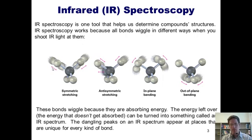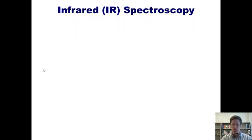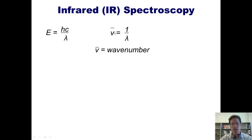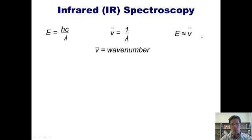Now I want to reacquaint you with a few physics equations you might remember vaguely from a past class. Here's the first equation: energy equals HC divided by lambda. Lambda is wavelength. Now this is supposed to be a symbol called nu with a little line over it, which represents wavenumber. Wavenumber is inversely related to wavelength. Thus, because energy is proportional or inversely proportional to wavelength, energy is directly proportional to wavenumber.